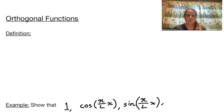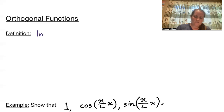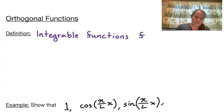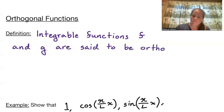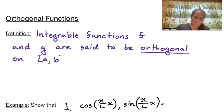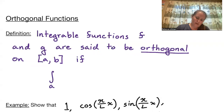Welcome to orthogonal functions. Just a quick definition: integrable functions f and g are said to be orthogonal on the interval [a, b] if the integral of their product is zero over that interval. So if the integral from a to b of f(x) times g(x) dx is equal to zero.